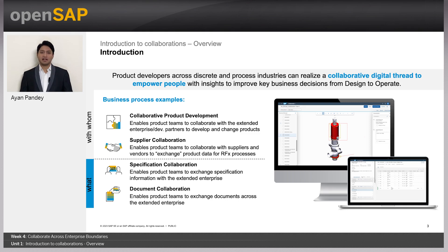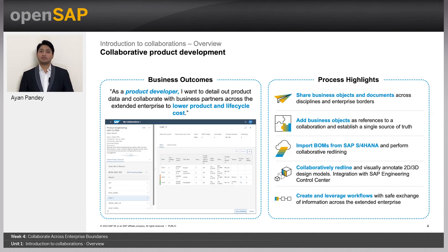Certain business process examples are: collaborative product development, which enables product teams to collaborate with the extended enterprise or development partners to develop and change products; supplier collaboration, that enables product teams to collaborate with suppliers and vendors to exchange various data such as RFX processes; specification collaboration, which enables product teams to exchange specification information with the extended enterprise; and document collaboration, that enables product teams to exchange documents across the extended enterprise as well.